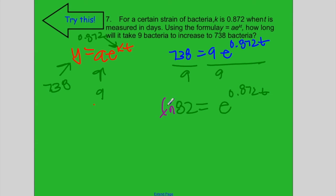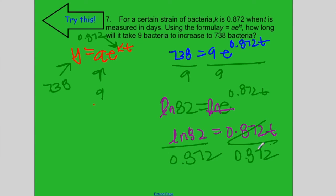Natural log on both sides. So I have natural log of 82 equals 0.872t. Then I would divide both sides by 0.872. So on my calculator, I would do natural log of 82 divided by 0.872. If I do that, I will get t is equal to 5.054 days.